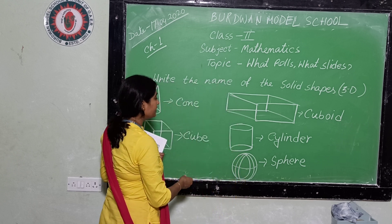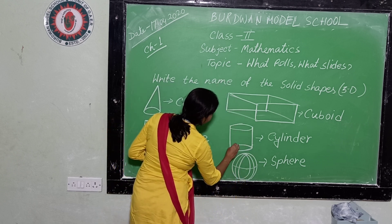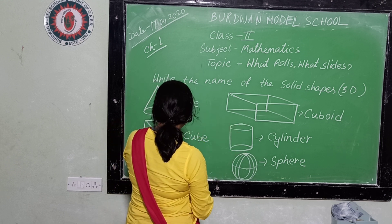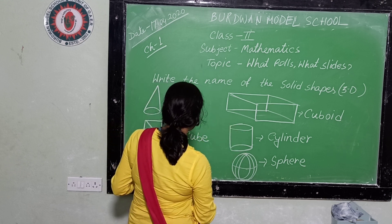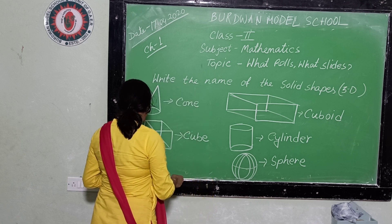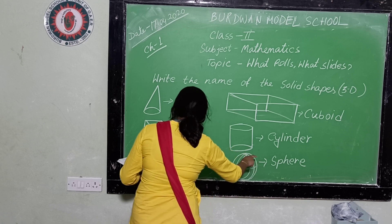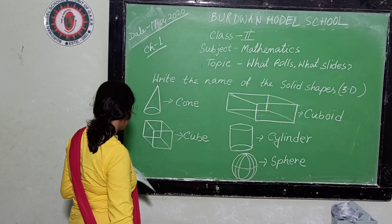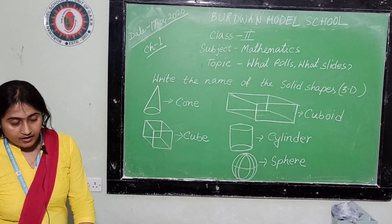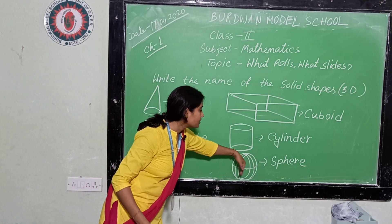And the cylinder has one curved face and two flat faces. And now there is a sphere — in a sphere, only one face, only one curved surface. There is no vertex, no edge — only one curved surface.